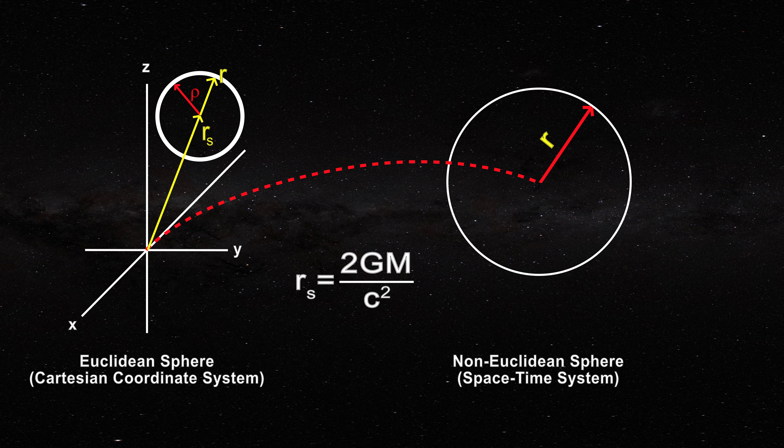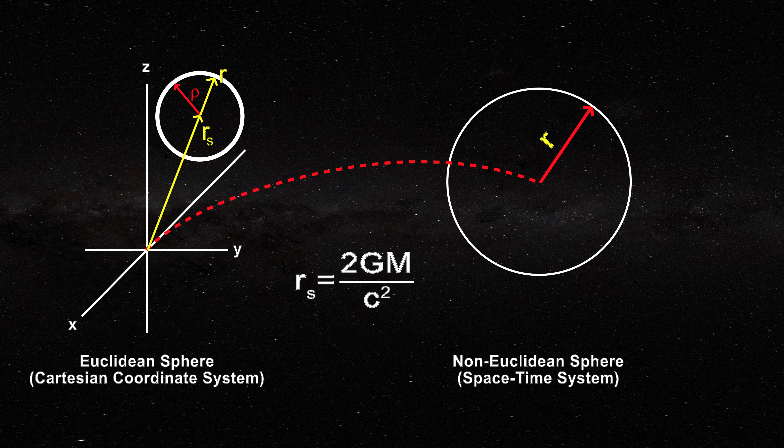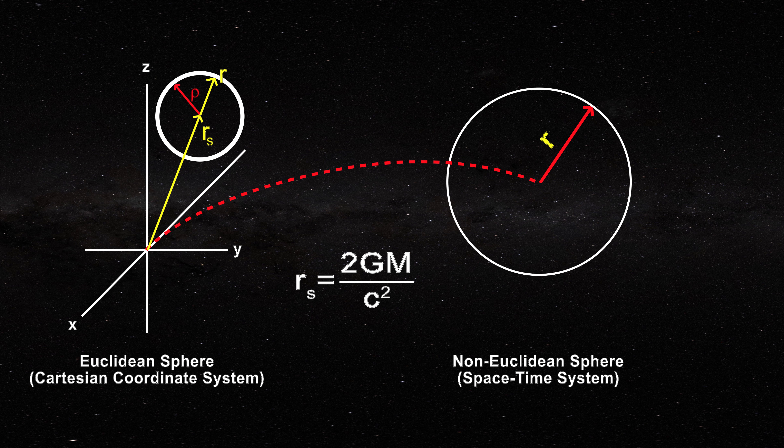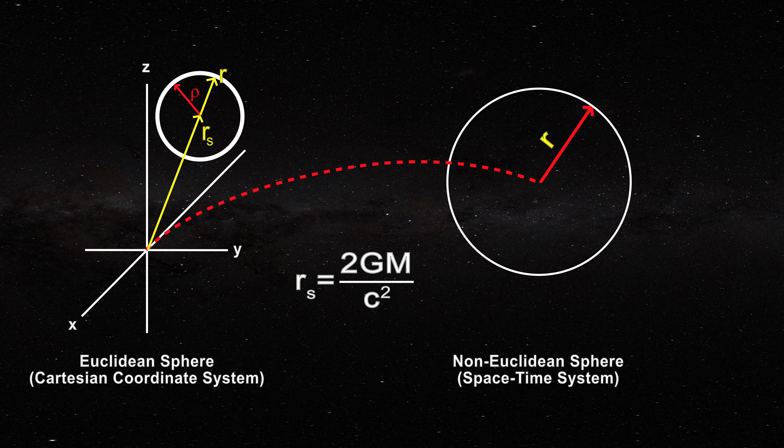This is precisely how the black hole acquires two singularities, one at the event horizon, where rho equals zero, but little r is greater than zero, and one at the black hole mass, where little r equals zero.